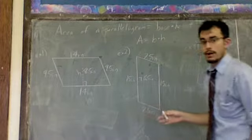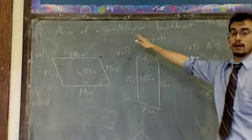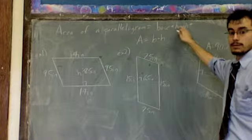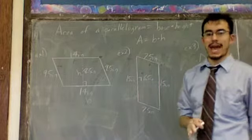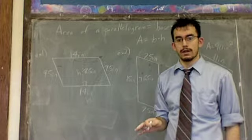The formula for the area of a parallelogram is right here, right at the top. The area of a parallelogram is the base times the height. Now, what I mean by base and height, a base can be any one of the four sides of a parallelogram. Any one.